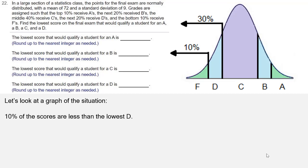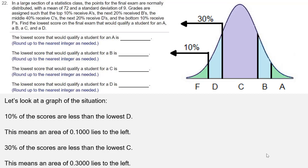If 10% of the scores are less than the lowest D, then that leaves an area of 0.100 to the left. And 30% of the scores are less than the lowest C, which means that leaves an area of 0.300 to the left. So we're going to be looking for those values, 0.100 and 0.300, on our standard normal distribution table.